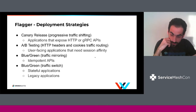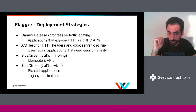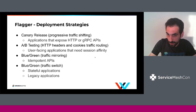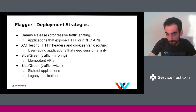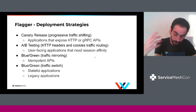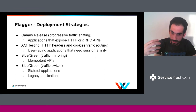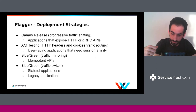Flagger implements a couple of deployment strategies. One is the ability to define canary releases, where you shift traffic between versions — this works very well for HTTP or gRPC APIs. Another strategy is A/B testing, where you segment your users with HTTP headers or based on cookies, and this works best for user-facing applications that need session affinity. A third strategy is blue-green deployment with traffic mirroring, where Flagger controls the service mesh or ingress controller to duplicate traffic between two versions of the same application, so the end user is not impacted.